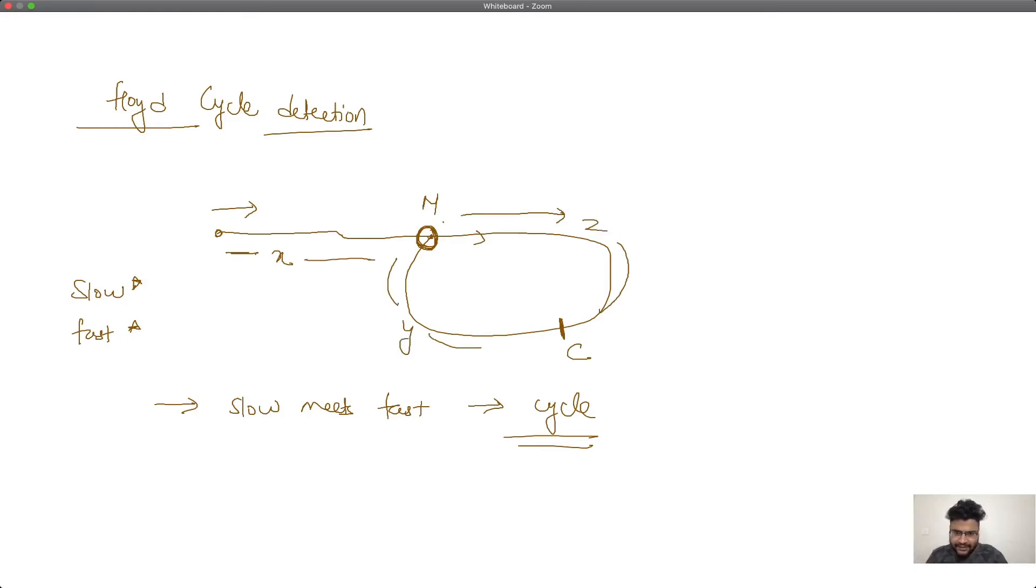If slow is meeting fast at any given point, how much distance will be traveled by slow pointer? The distance traveled by slow would be x plus z. On the other end, how much distance will fast travel? Fast will go x, then z, then y, then again z. So it will be x plus z plus y plus z.